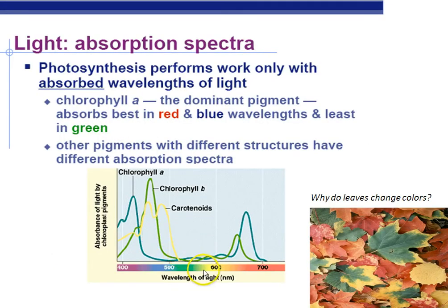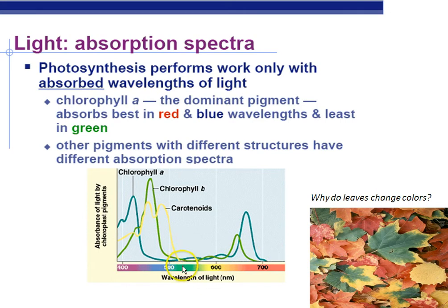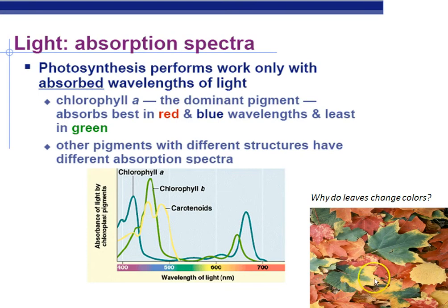Chlorophyll does not capture all wavelengths of light. It captures mainly wavelengths that are not green — things like purple, blue, red, and orange. There are other accessory pigments that can capture other wavelengths, but green is not well captured by plants. When green bounces off plants, that's why plants appear green — they're absorbing everything but the green. Leaves change color because chlorophyll breaks down in cold weather, revealing accessory pigments like carotene and xanthophyll.